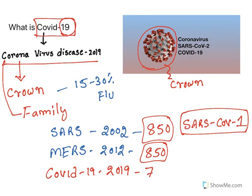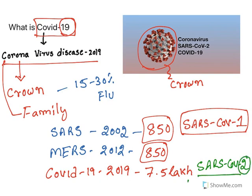Till now there are around 7.5 lakh deaths reported and it is still ongoing. This virus is also known as SARS-CoV-2, meaning it is very similar to SARS-CoV-1 but is a new one, hence the number 2. Because of its newness, it is also known as novel coronavirus. The coronavirus is interchangeably called coronavirus, SARS-CoV-2, as well as COVID-19.